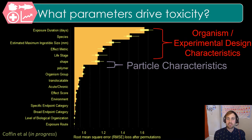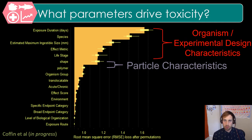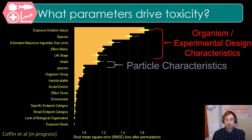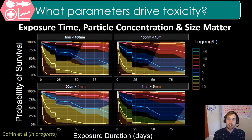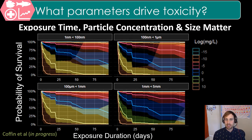We performed relative feature analysis to determine which parameters drive toxicity. This analysis reveals that organism and experimental design characteristics, such as species and exposure duration, are most important in determining a microplastic's toxicity effect concentration. While particle characteristics like shape and polymer were found to be significant, however, to a lesser degree. A simple general linear model demonstrates the interplay between the exposure duration, shown on the x-axis, and particle size grouped by different bins shown in the panels, with probability of survival on the y-axis. As you have longer exposure durations, the probability of survival for that organism decreases.